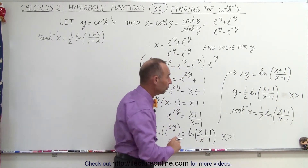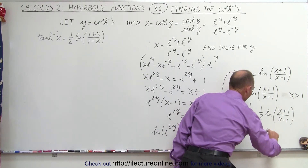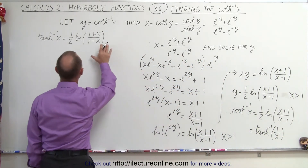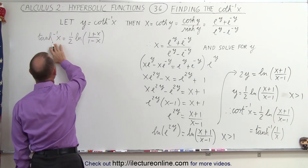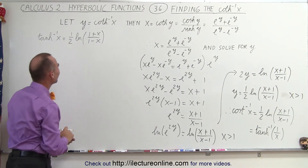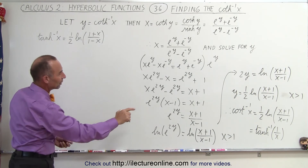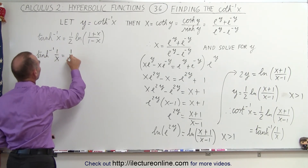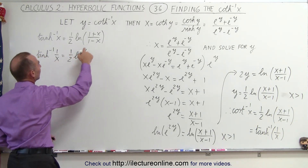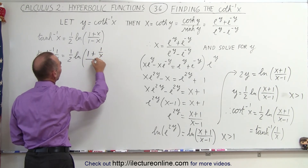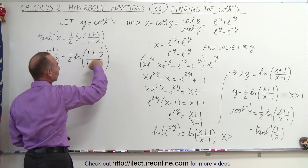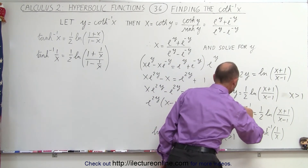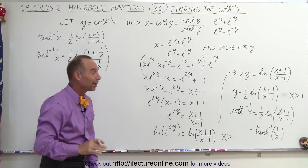And then we can also claim that this is equal to the inverse hyperbolic tangent of 1 over x. To show you why that is the case, let's come over here. I have already written down the equivalent of the inverse of the hyperbolic tangent of x. So what we're going to do is plug in 1 over x. So now we're going to solve for the inverse hyperbolic tangent of 1 over x, which is equal to 1 over 2 times the natural log of, and we're going to replace every x by 1 over x. This becomes 1 plus 1 over x divided by 1 minus 1 over x. Then we're going to simplify that and show that this is indeed equal to the inverse hyperbolic cotangent of x.